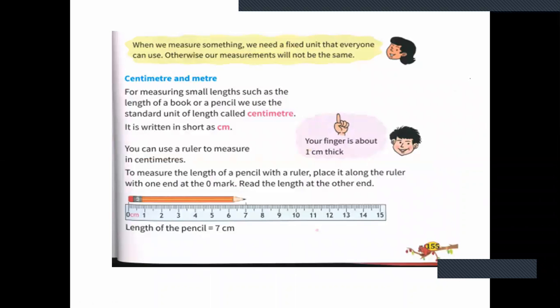When we measure something, we need a fixed unit that everyone can use. Otherwise, our measurements will not be the same. If you want to take a measurement of a particular thing, you have to have a fixed point. Then only you can get an exact measurement.